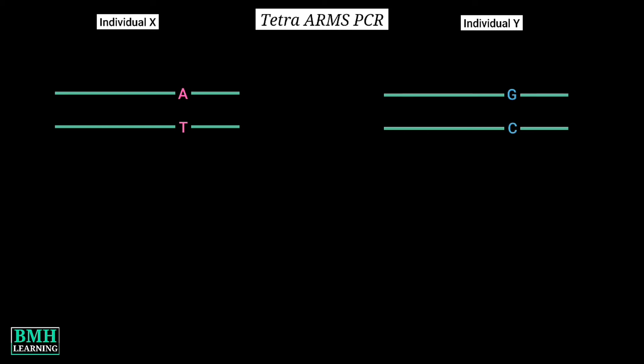To make it more simple and easy to understand, we are talking about only one strand. So our aim is to confirm the status of the allelic form using Tetra ARMS PCR.